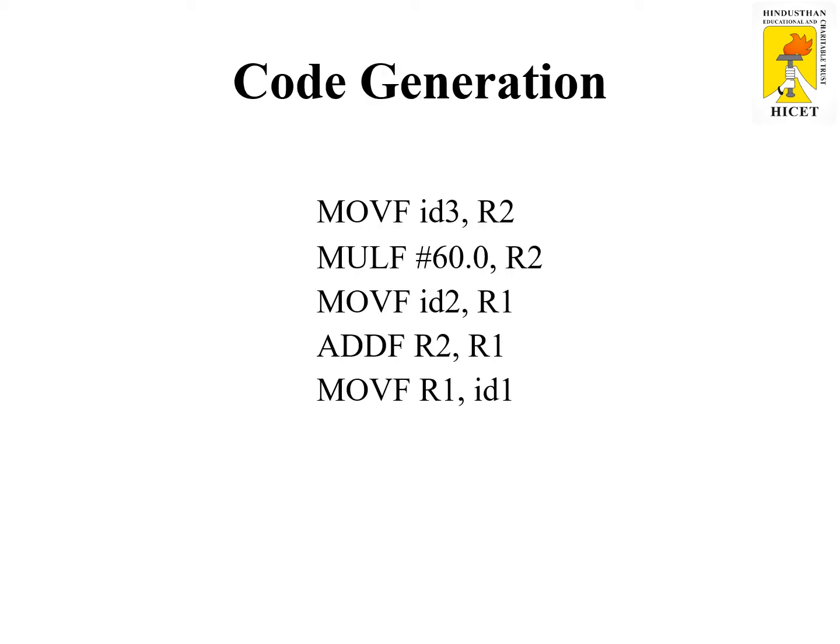Code generation is the last phase of the compiler. The input is the optimized code and the output is the target program. For example: MOV F id3, R2 — the value of id3 is stored in register R2, where F stands for floating point. The second line multiplies 60.0 into the value in R2, storing the result in R2. In line 3, the value of id2 is moved to register R1. In line 4, registers R2 and R1 are added and the result is stored in R1. In the last line, the value from R1 is moved to id1. A simple target program is generated after going through all these steps.